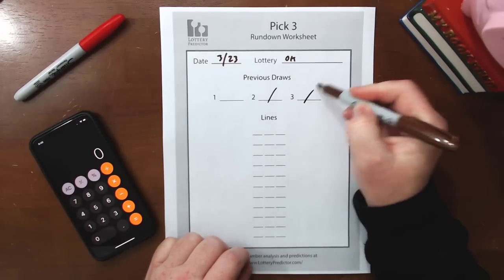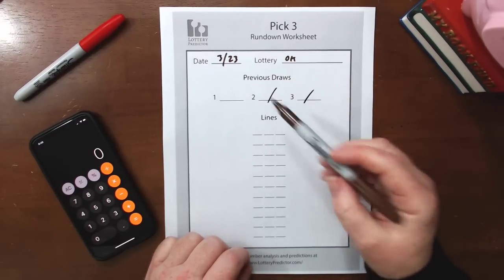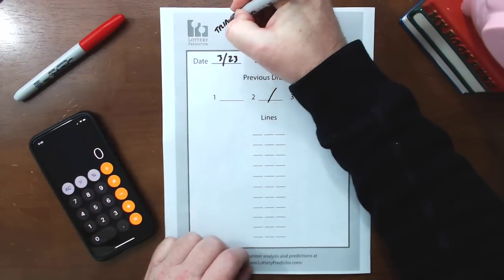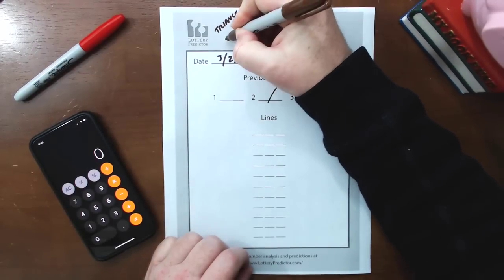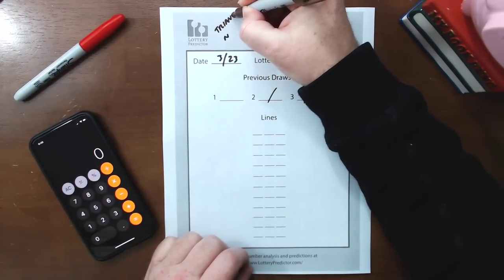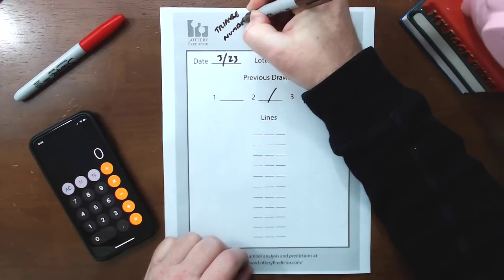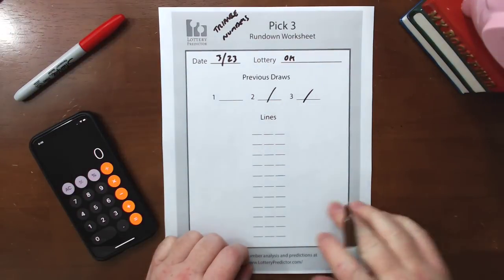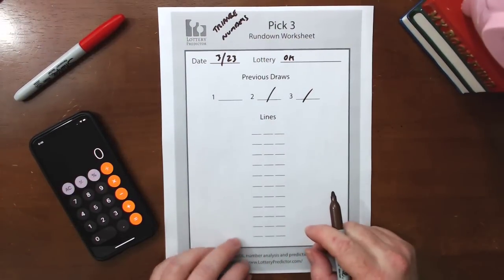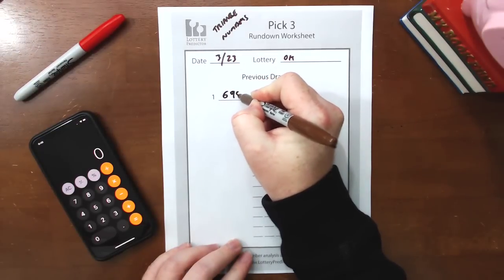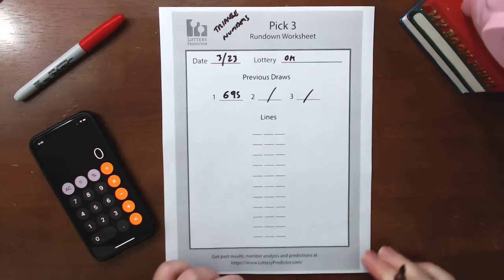But we're only going to need the one result. So we're going to have, as I said, triangle numbers. I spelled triangle wrong, forgive me. I'll spell it right next time. So we're going to take the result from the 23rd of March for Oklahoma, and it was a 695. Now, what is a triangle number, you may be saying?